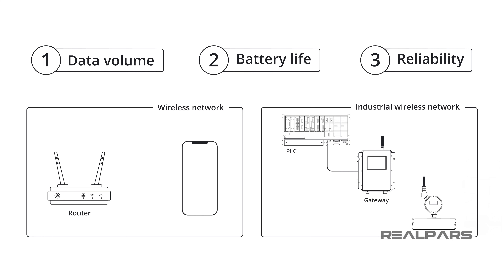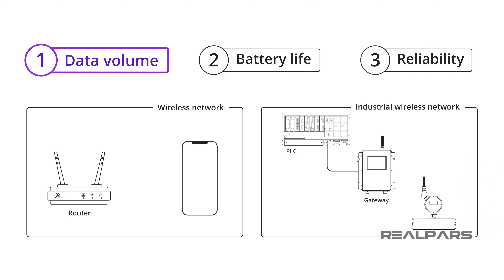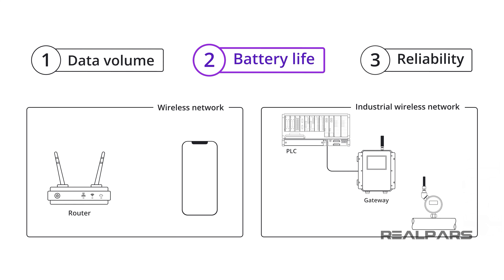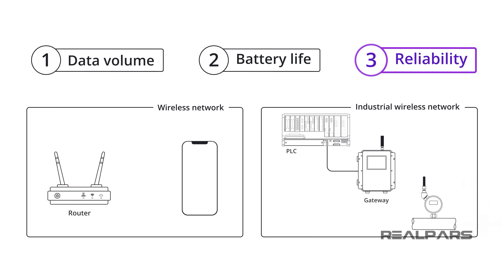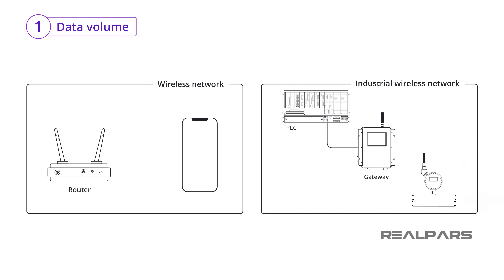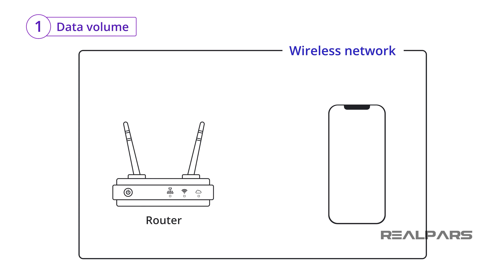These two major types of wireless networks are different in terms of the amount of data that they typically send and receive, the battery life of the devices used in these networks, and how important reliability of the data is to the user. The main difference is the amount of data usually sent and received between devices. Let's take Wi-Fi as an example of a typical wireless network.